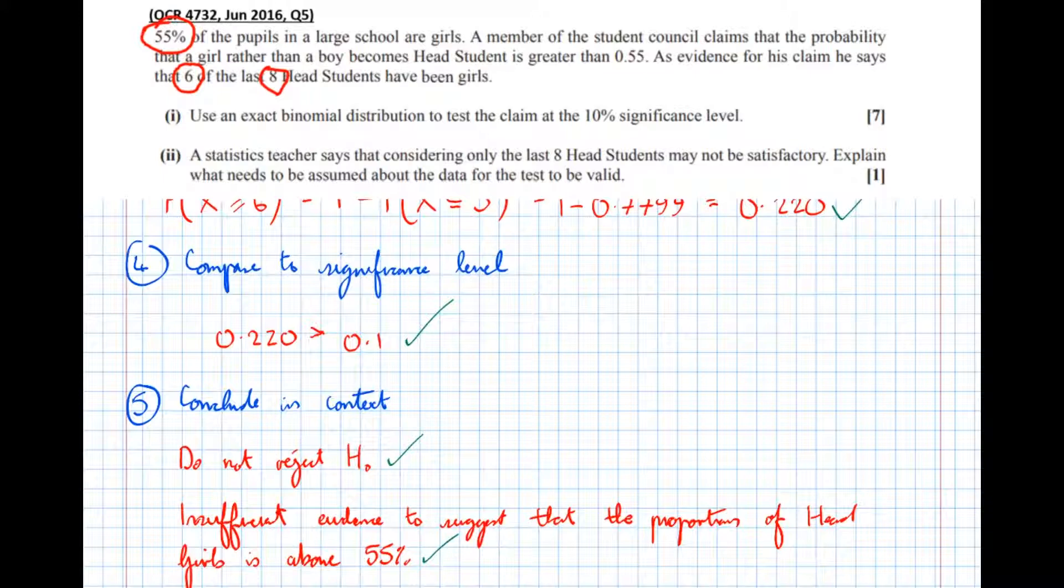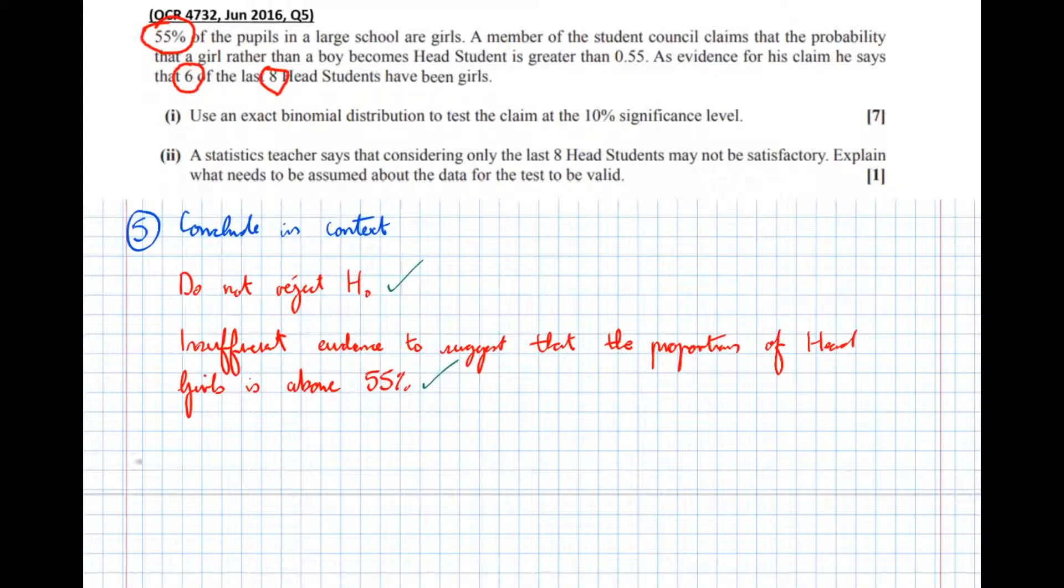Then just for fun, part two. A statistics teacher says that considering only the last eight head students may not be satisfactory. Explain what needs to be assumed about the data for the test to be valid. The sample of head students is random. There must be a random sample in order for the test to be valid. The sample of head students is random. Now I'm going to put the PDF of this available online on my website, alevelmathsrevision.com. Quite a complicated topic, so there are lots of lesson notes on this on there. So you maybe want to have a look at that.